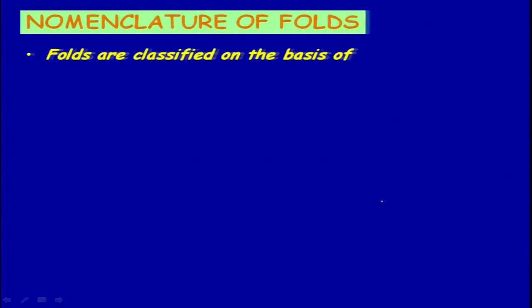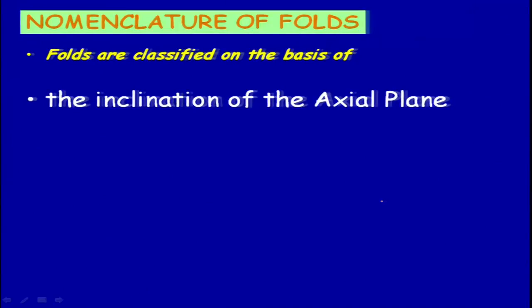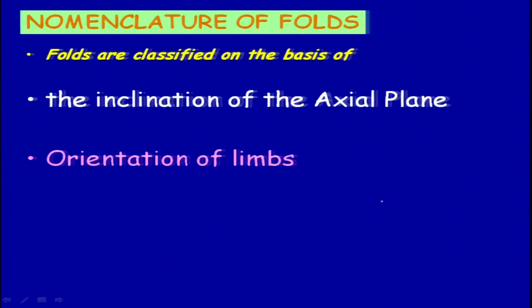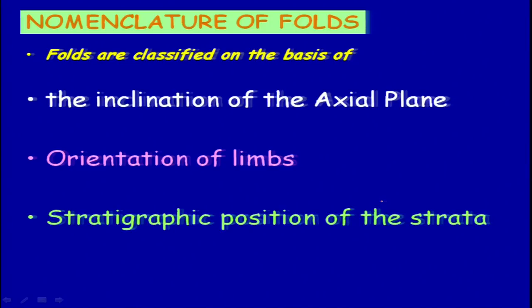Usually folds are classified on the basis of: one, the inclination of the axial plane; and two, the orientation of the limbs. This is important because when you interpret satellite data, you will talk about whether the folds are symmetrical or asymmetrical — if one limb is dipping at a higher angle compared to another, you will mark it as an asymmetrical fold. Also important is the stratigraphic position of the strata. These are the main three points on which you will be able to classify your folds: whether it is anticline or syncline, whether it is symmetric or asymmetric.